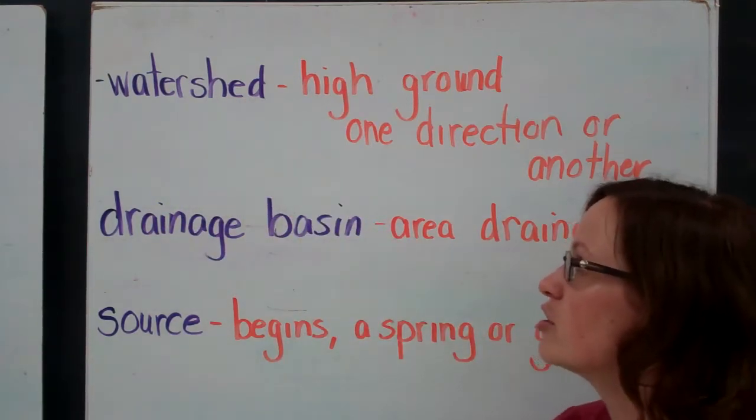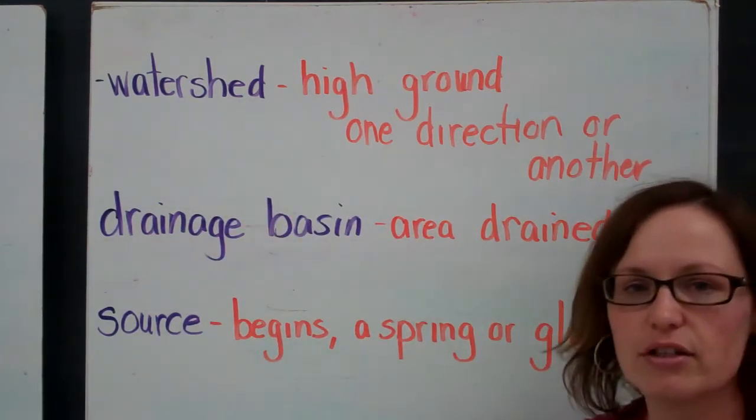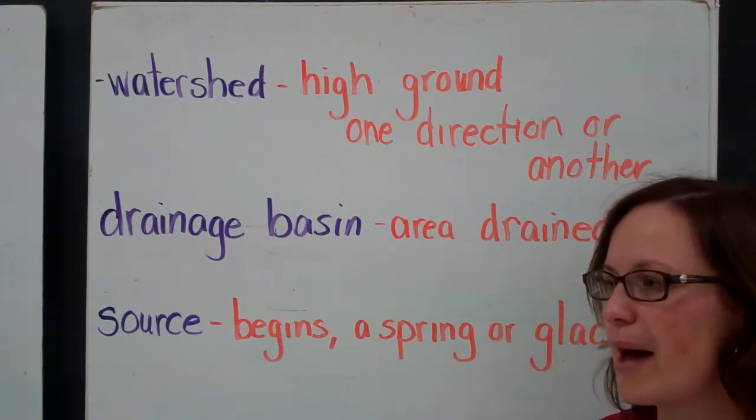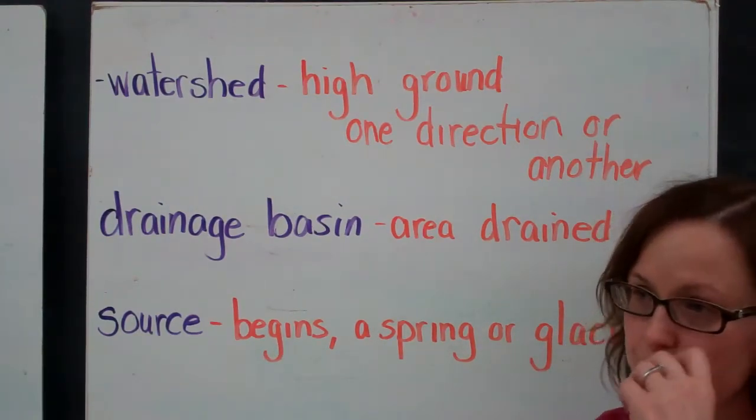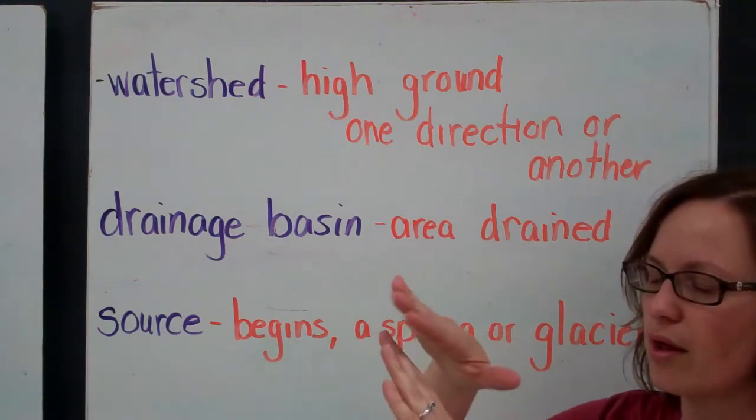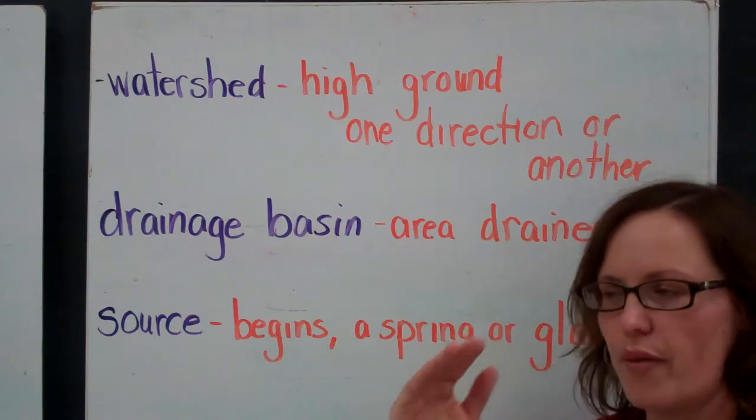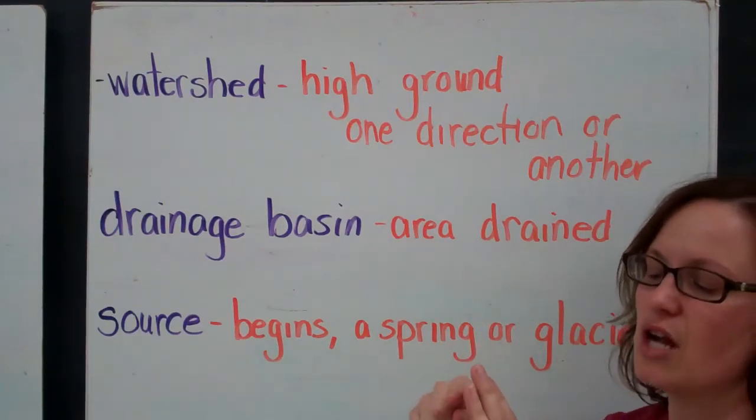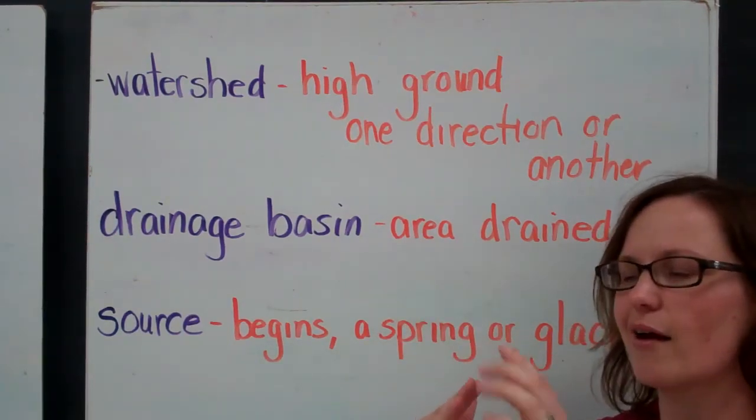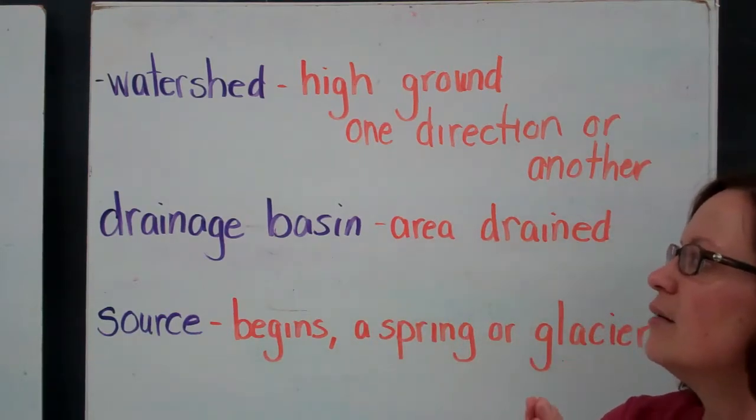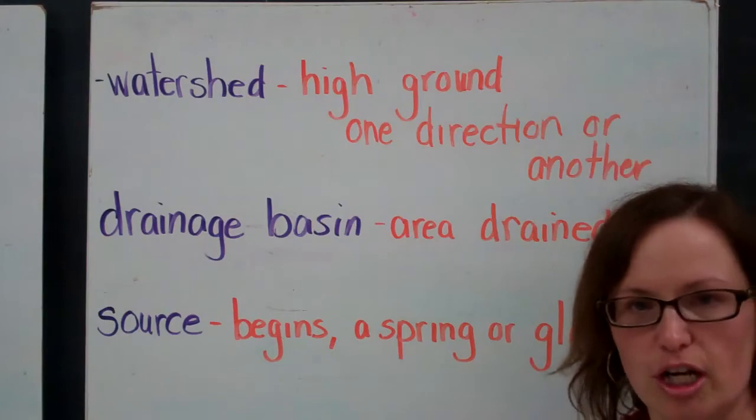A watershed is a high level of ground that determines which direction a river flows in. So if you imagine a mountain top, the water on this side will flow in this direction and the water on this side will flow in that direction. A river system does not go over a watershed. You're not going to have water flow up over a high elevation to another side. So watershed determines which direction a river flows in.